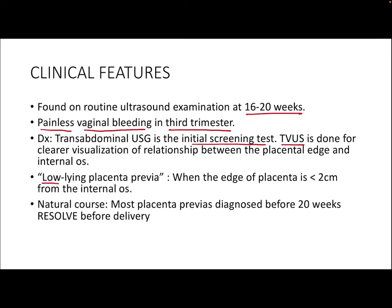On ultrasound, a low-lying placenta is defined as when the edge of the placenta is less than 2 centimeters from the internal os. Most placenta previas diagnosed before 20 weeks usually resolve before delivery. One reason is that the lower uterine segment lengthens as pregnancy advances, shifting the placenta away from the internal os. Also, the lower uterine segment is less vascular, so as the placenta grows it does so preferentially towards the upper segment, leading to migration of the trophoblast towards the uterine fundus — this is called trophotropism.